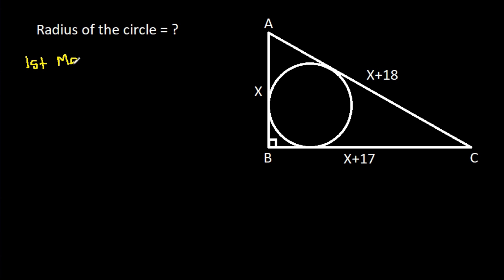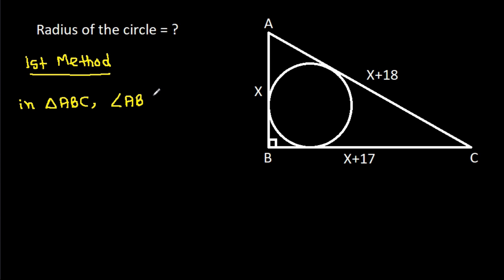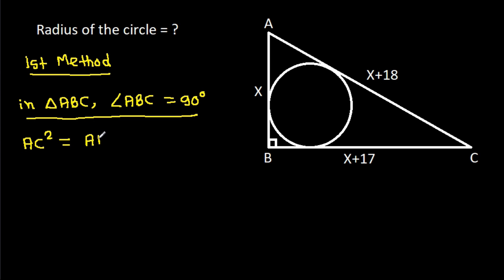The first method: in triangle ABC, angle ABC is 90 degrees. So by Pythagoras theorem, AC squared will be equal to AB squared plus BC squared.